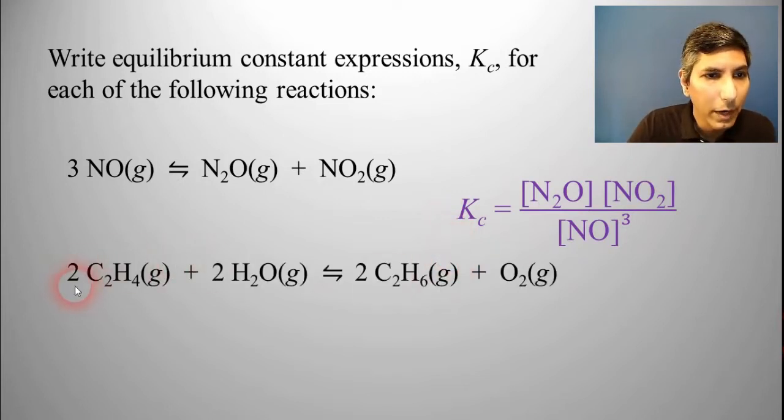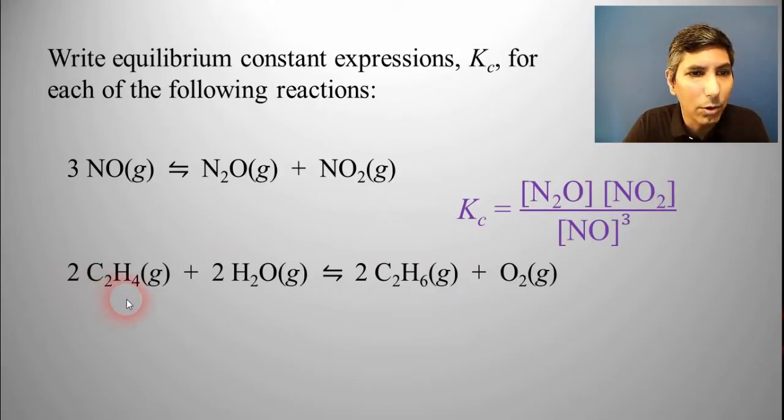Here's another one. We have 2C2H4, so that looks like ethene, I believe, plus 2 water gas yields 2C2H6, which is ethane gas, plus oxygen gas.